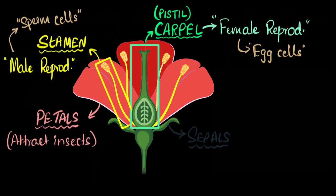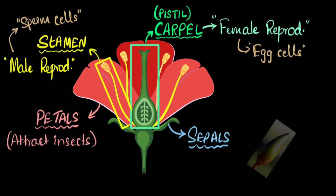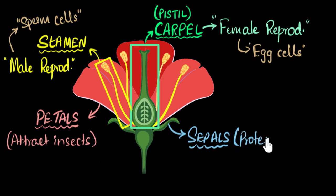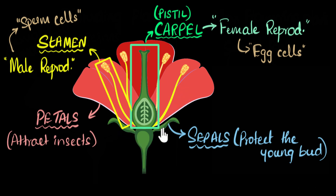Finally, the fourth part is the sepals. Sepals played an important role in protecting the flower before it blossomed. Before a flower opens, it's a bud, and the sepals cover and protect it — from being eaten, for example. Their main job was to protect the young bud. Now that the flower has blossomed, their job is done, but they did play an important role.